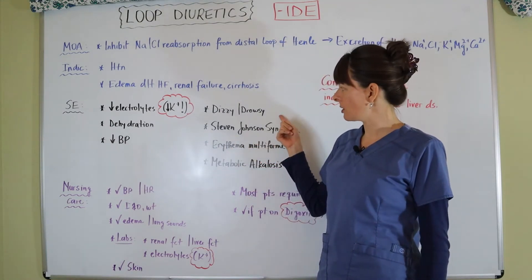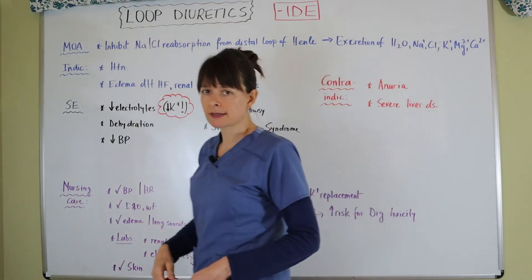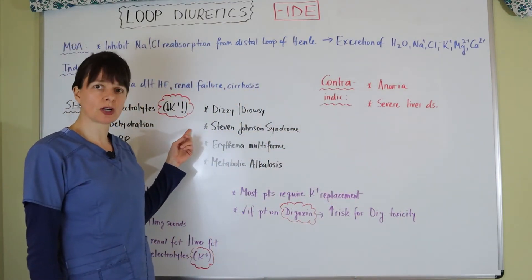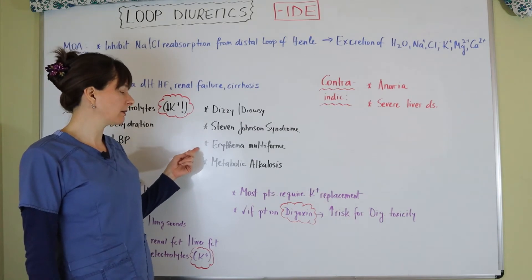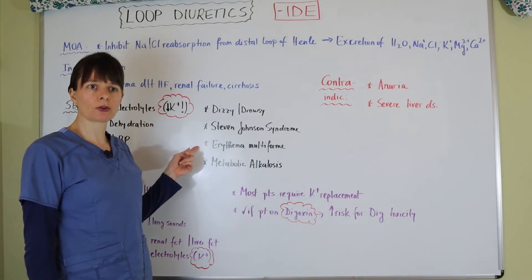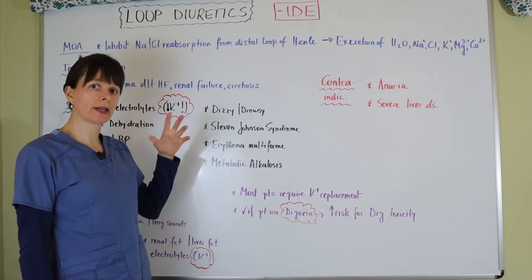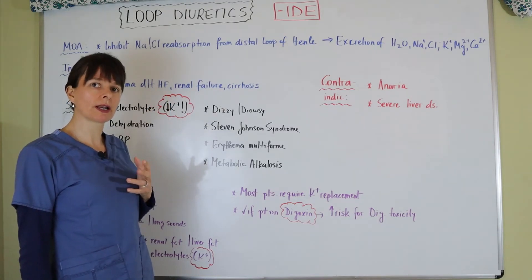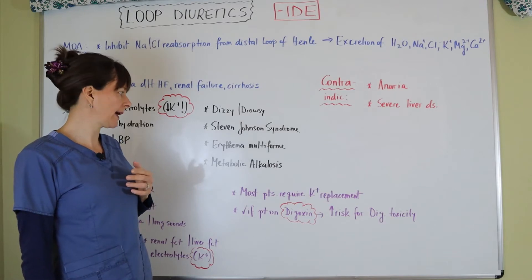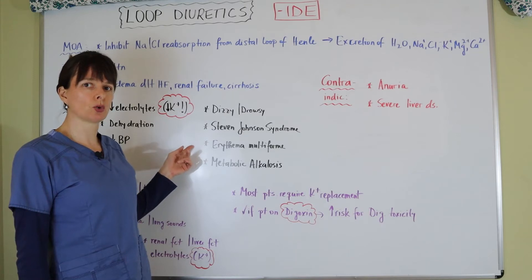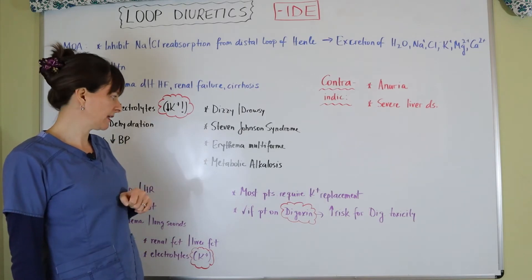And loop diuretics can also cause dizziness, drowsiness, and then two specific skin conditions called Steven Johnson syndrome and erythema multiform. So I encourage you to Google search these conditions so that you can become familiar what they look like, what these rashes look like. So then you can detect them in your patients if they're on loop diuretics, maybe newly getting these medications.